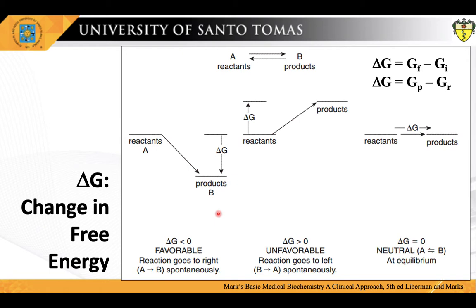In studying the concept of change in free energy, delta G will reveal several important points. First, delta G represents the free energy change at any point during transformation. Secondly, the value of delta G could determine the extent of the reaction and whether work is performed. Thirdly, free energy change represents the maximum amount of chemical energy potentially available for doing useful work. It is a valid method for predicting the feasibility of a reaction. And lastly, any transformation may be described by comparing the physical and chemical properties of the initial and final states of a system or a reaction.